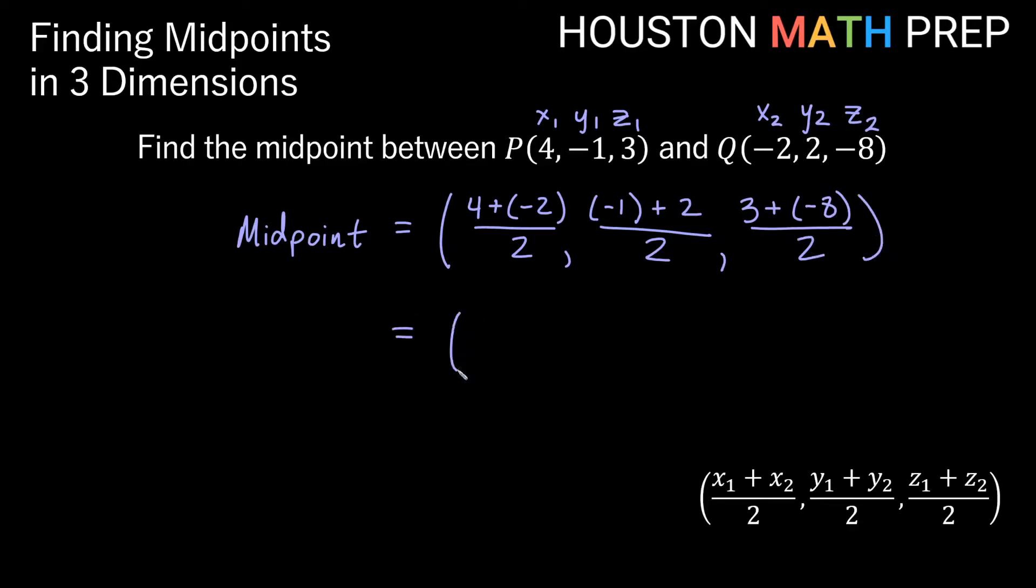And so then we'll go ahead and see this is 4 minus 2, so that's 2 over 2. Negative 1 plus 2 is going to give us 1 over 2. And 3 plus negative 8, or 3 minus 8, will give us negative 5 over 2.